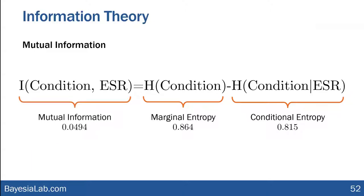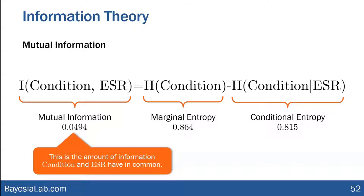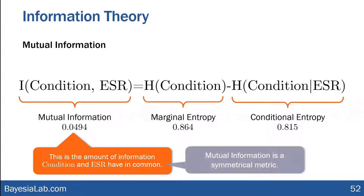Mutual information tells us how much information 'condition' and 'erythrocyte sedimentation rate' have in common. That is very powerful. Also, it is a symmetric metric — it captures what these two variables have in common between them. A very powerful measure that you will see in many examples.